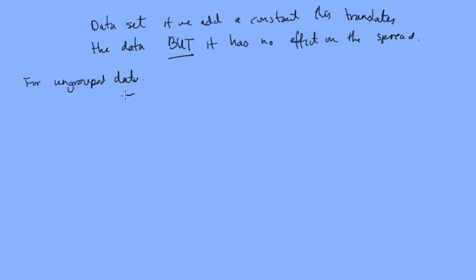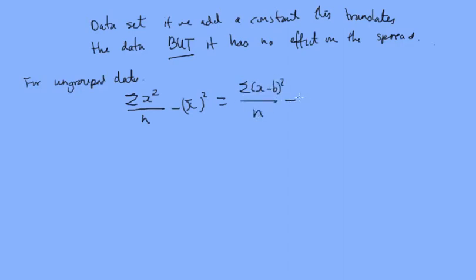For ungrouped data, the variance is the sum of x squared over n minus the mean squared. If we have coded data, we can use the same formula with coded values: the sum of (x minus b) squared over n, minus the sum of (x minus b) over n, all squared.